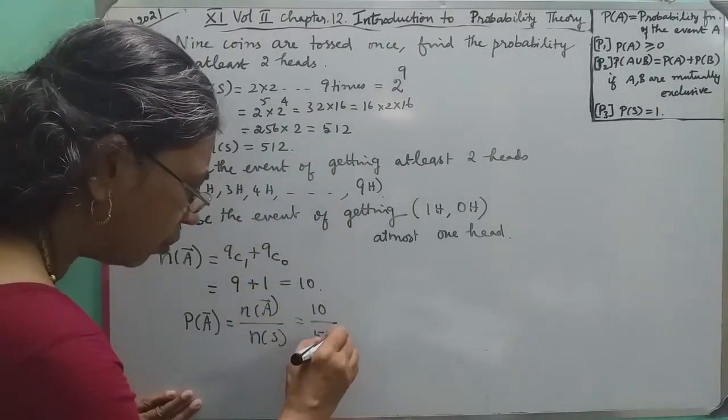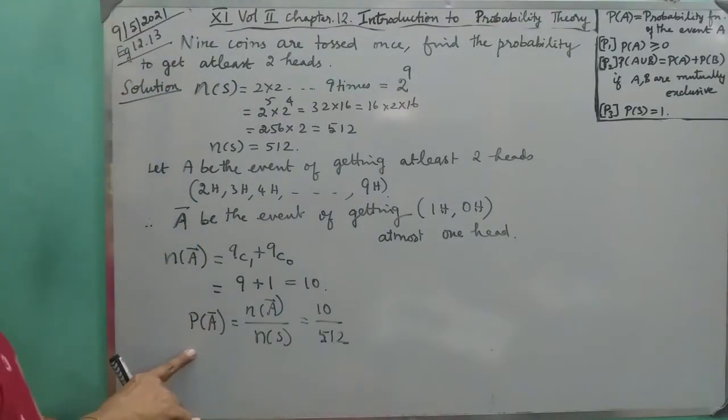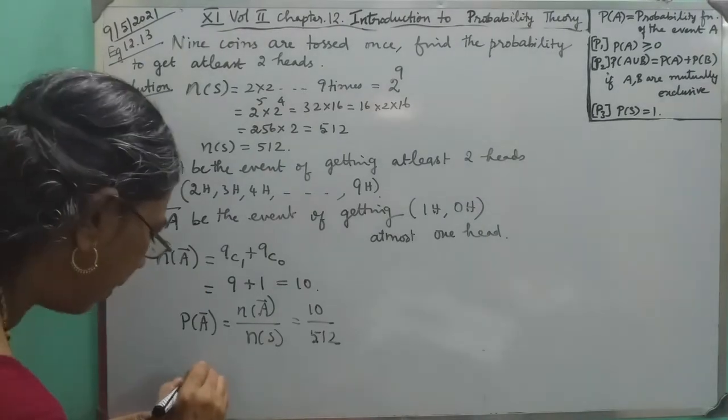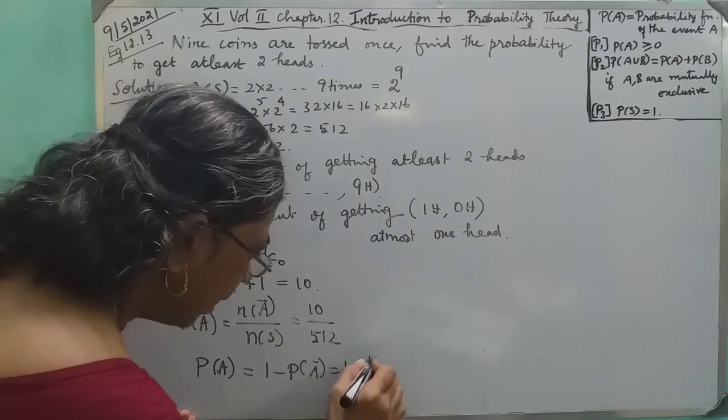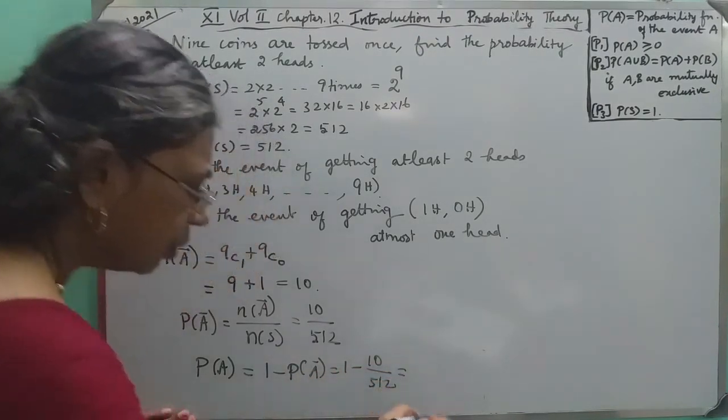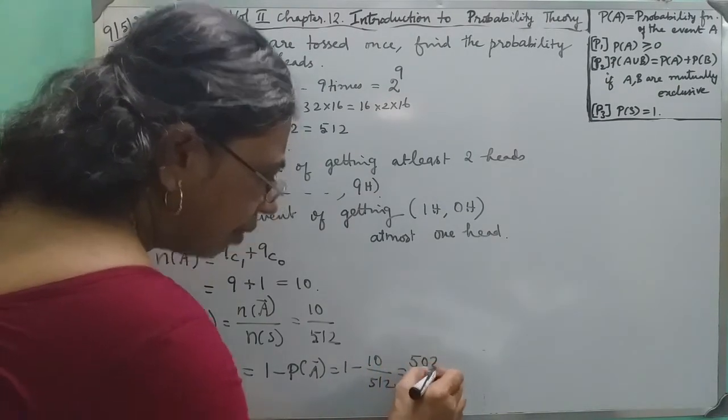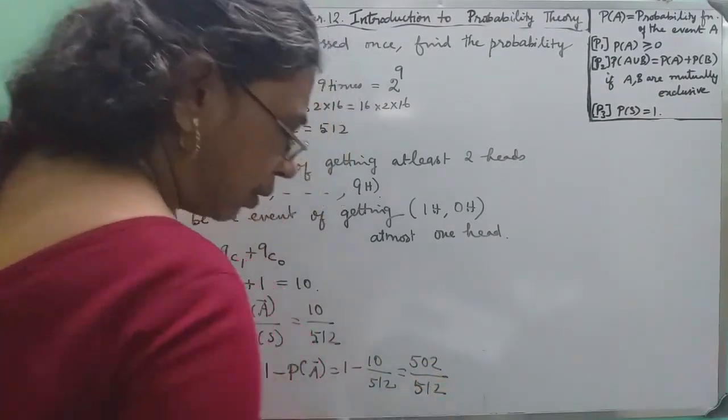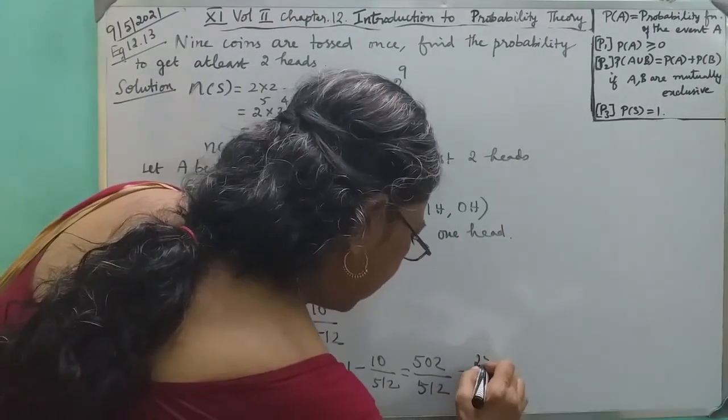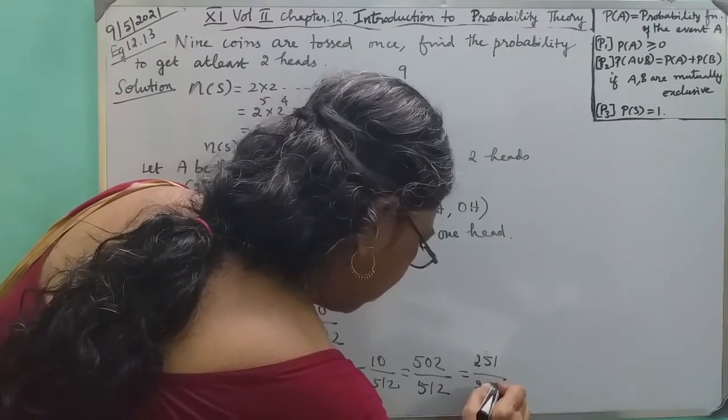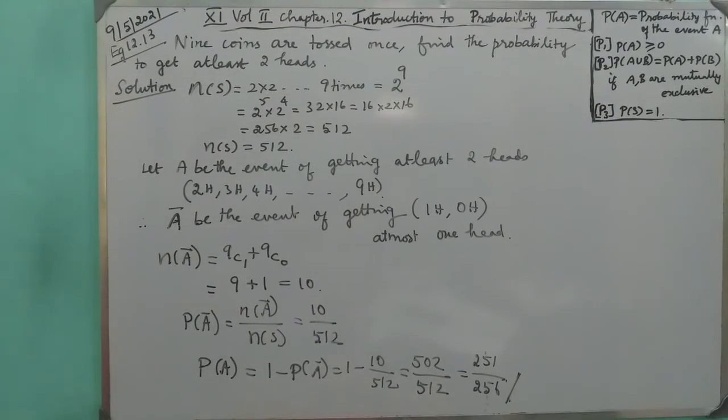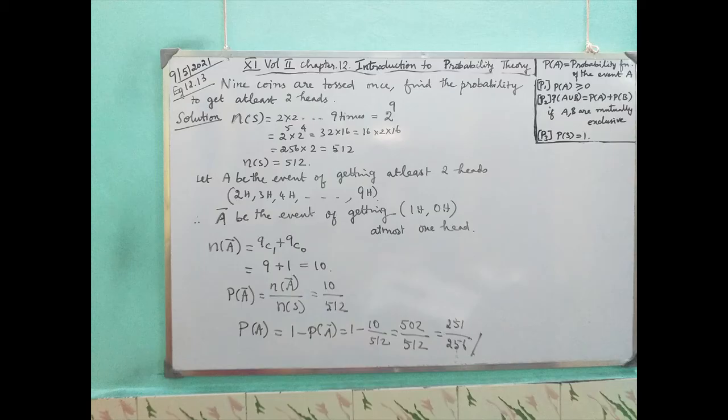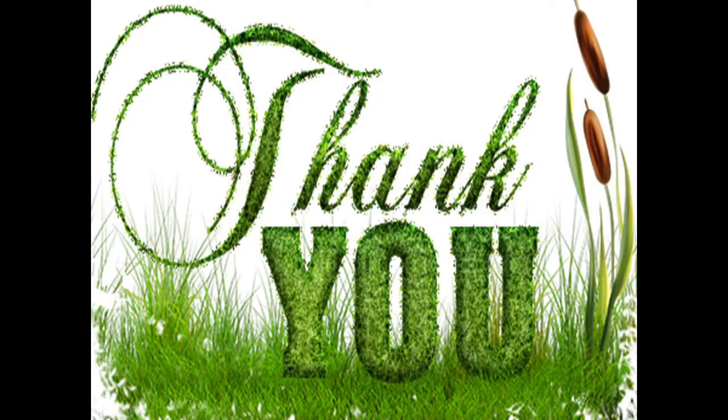n(A bar) divided by n(S) equals 10 over 512. Using complement, P(A) equals 1 minus P(A bar), which equals 1 minus 10/512, equals 502/512, equals 251/256.